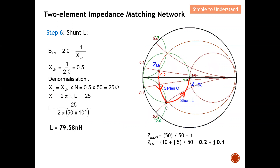Firstly, we need to plot the two normalized points. Z_in equals 1, so this point sits exactly at the center of the Smith chart. For Z_L, which is 0.2 plus j0.1 — the green circle represents admittance and the red circle represents impedance. I look at the red circle and find 0.2. Since the imaginary part is positive, the point is above the resistive line at j0.1. This is how I plot Z_load on the Smith chart.